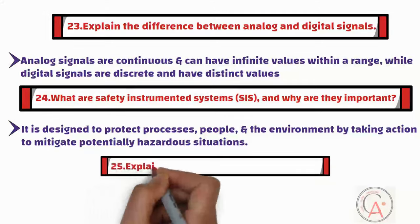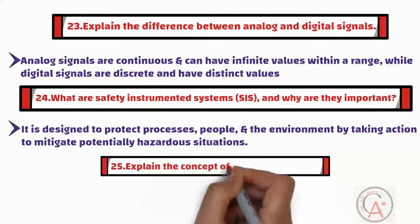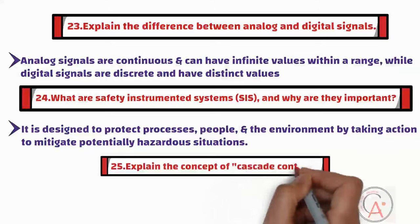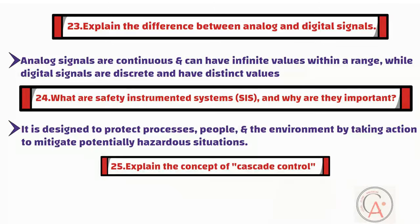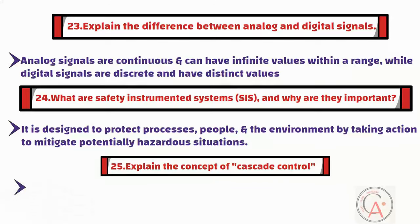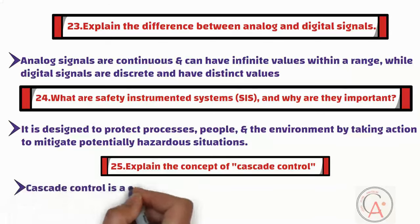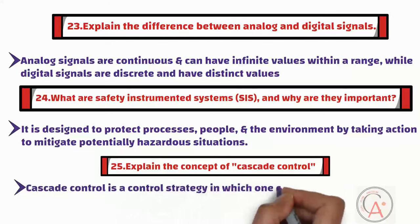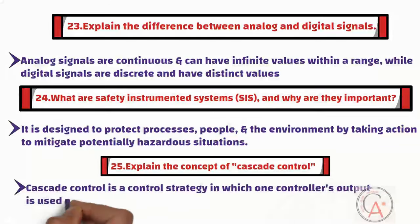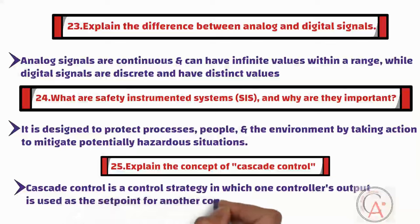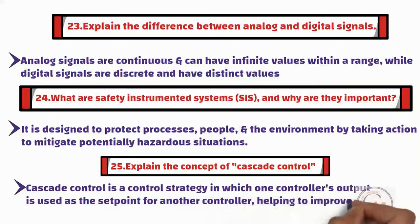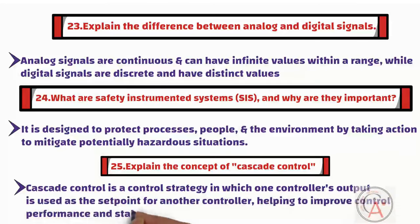Question twenty-five is: explain the concept of cascade control. Cascade control is a control strategy in which one controller's output is used as the setpoint for another controller, helping to improve control performance and stability.